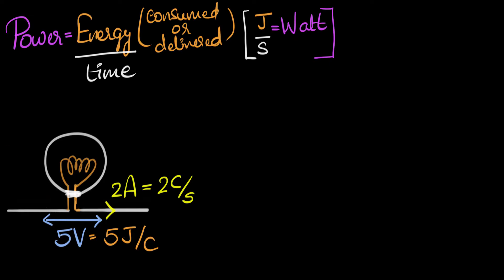Alright, let's do this. Let's write that down over here. I'm going to wait for one second and see what happens. In one second, I know two coulombs of charge will pass through. But, each coulomb will deliver five joules of energy. So, two coulombs will deliver two times five, ten joules of energy. And therefore, in one second, ten joules of energy will be delivered to the bulb, and so the power would be ten watt.